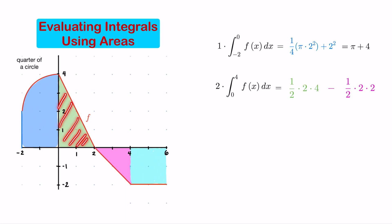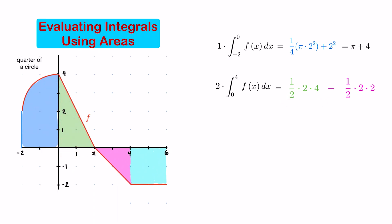The value of our definite integral equals the area of the region above the x-axis — using the formula for area of a triangle: one-half base times height, so one-half times 2 times 4 — minus the area of the triangle below, which is one-half times base 2 times height 2. This difference is 4 minus 2, which equals 2.